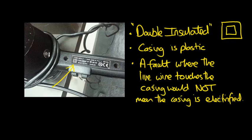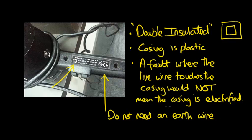So it wouldn't be a danger. It wouldn't be ideal, but it would mean that you wouldn't get an electric shock. And so appliances like this, they do not need an earth wire connected to the casing because the casing is already an insulator.